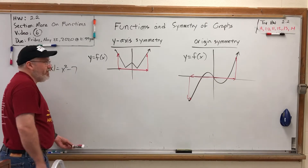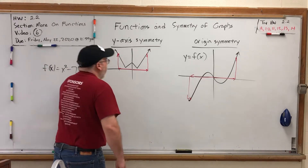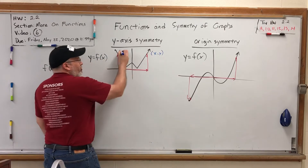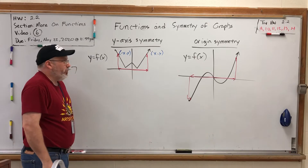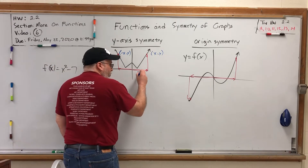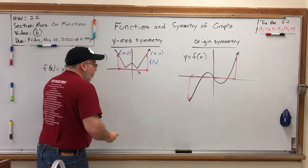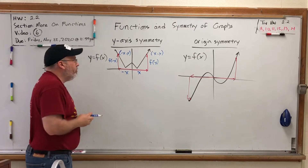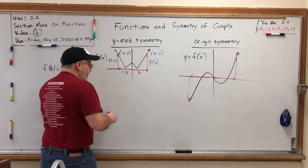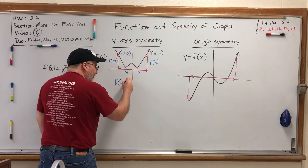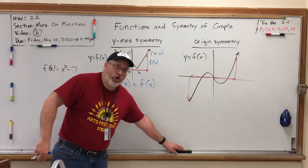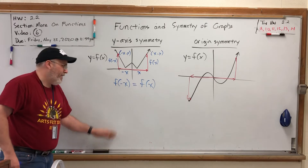I want to remind you what makes a function have symmetry in terms of its ordered pairs. For y-axis symmetry, if you have an ordered pair on the right side of the graph, x comma y, then its mirror image on the left side would be negative x comma y. Thinking about this in terms of functions — the output is the y-coordinate — if we go over x we go up f of x, but if we go backwards x, we go up f of negative x. So if we have y-axis symmetry, going either left or right should produce the same output. In other words, f of negative x equals f of x.